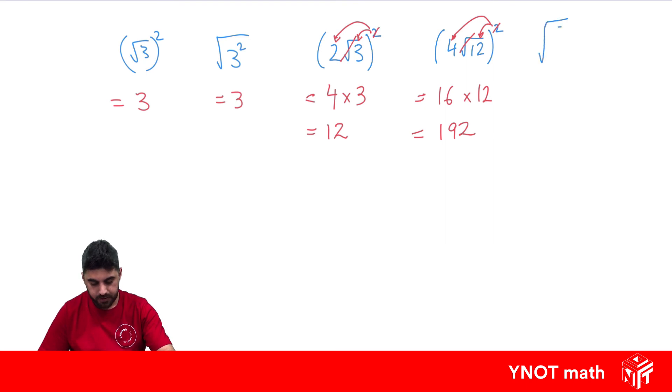Root 5 over 4 equals root 5 over root 4. Root 5 we can't do anything about, but root 4 is 2.